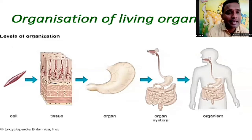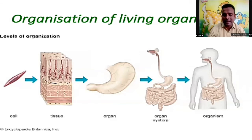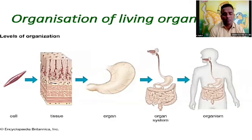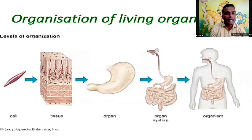Our body is made from millions of cells. There are types of animals — unicellular animals and multicellular animals. If you think about the human body, our body is made of millions of cells. The first and smallest unit of our body is a cell. Whenever many cells come together, they form a tissue.